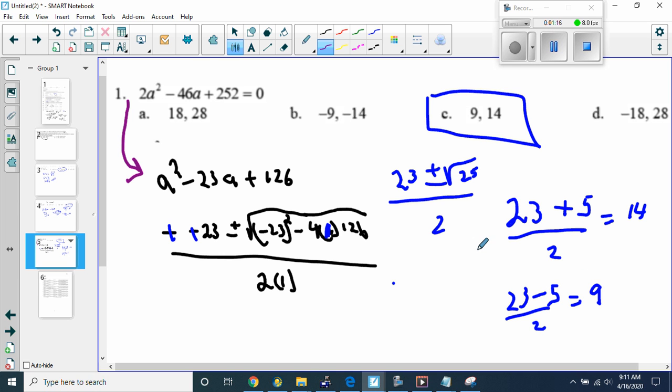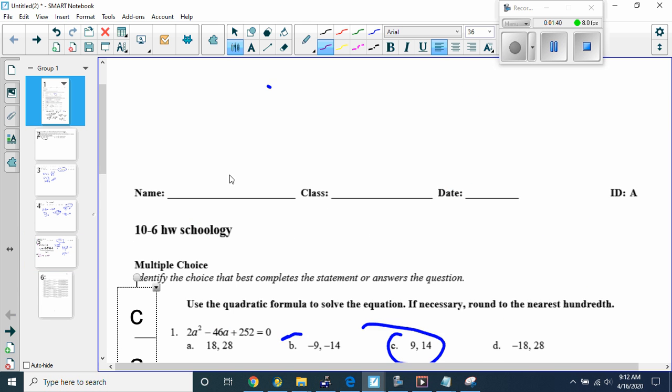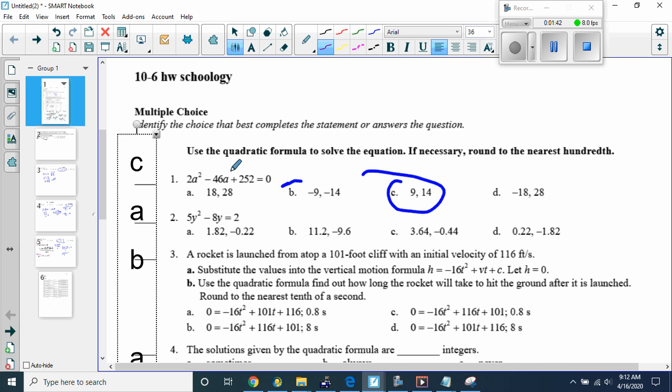You can pause the video and try this yourself the other way, making it a equals 2, b equals negative 46, and c equals 252, and you will get the same answers. You'll get 9 and 14 for your answers. Again, you can pause the video at any time and try one of these problems.